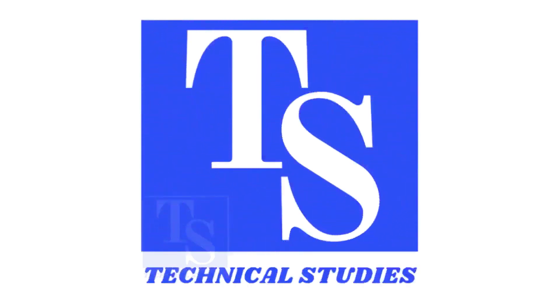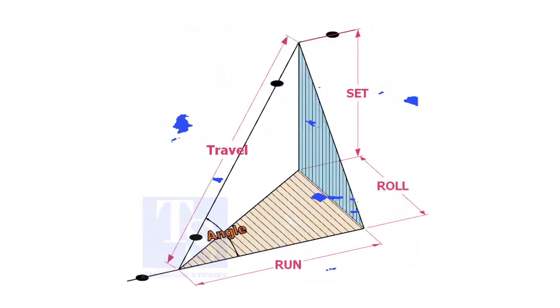Welcome to technical studies. In a piping drawing of a double rolled offset, usually the dimensions of the run, set and roll are given.